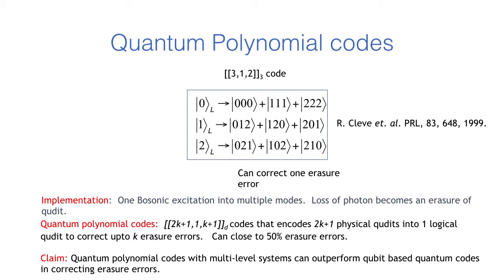This code can be generalized to quantum polynomial codes which encode 2k plus 1 qudits each with a dimension d into a single logical qubit so that it can correct up to k erasure errors. It can correct up to a fraction of k over 2k plus 1 which is close to 50 percent for large k.